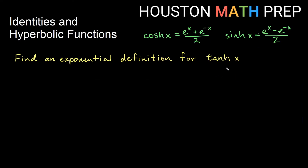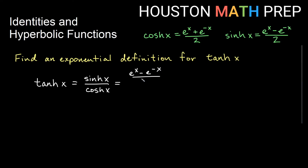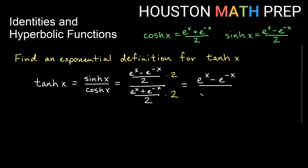Similarly for hyperbolic tangent: tanh(x) equals sinh(x) over cosh(x). We can plug in the definitions to this ratio. So we would have (e^x - e^(-x))/2 for sinh, and in the denominator (e^x + e^(-x))/2 for cosh. We have a fraction over a fraction, so we multiply top and bottom by 2 to get rid of the over-2 parts. That gives us (e^x - e^(-x)) over (e^x + e^(-x)).